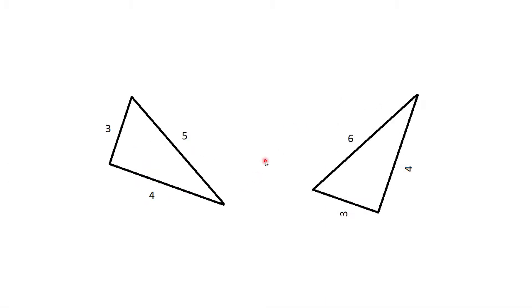Next one. These would be definitely not congruent, because one's a three, four, five, one's a three, four, six, so they're different size.